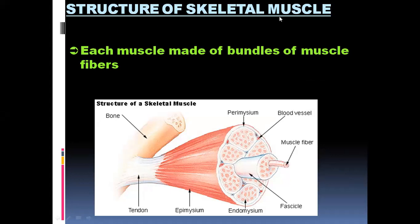Each muscle is made up of bundles of muscle fibers. Muscle fibers are known as the muscle cells. This is the muscle bundle, and this is the extension of the muscle which is called the tendon, joining through the bone.